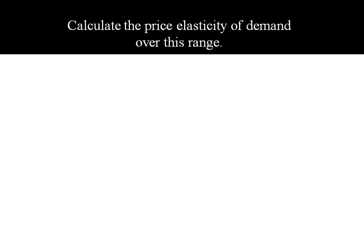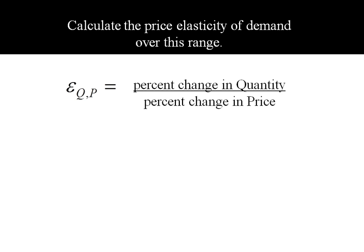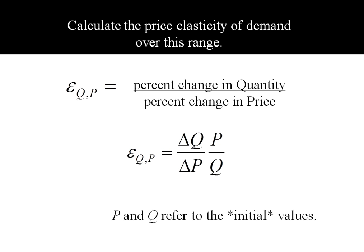Let's calculate the price elasticity of demand over this range. The formula for price elasticity of demand is the percent change in quantity divided by the percent change in price, or in more formal notation, delta Q divided by delta P times P over Q, and P over Q refer to the initial values.